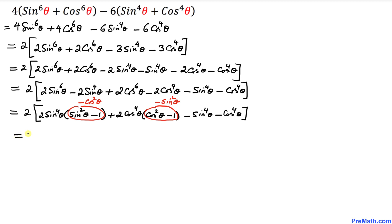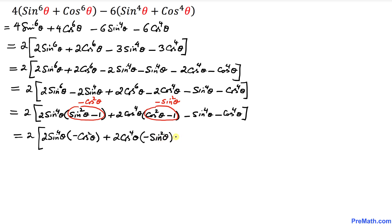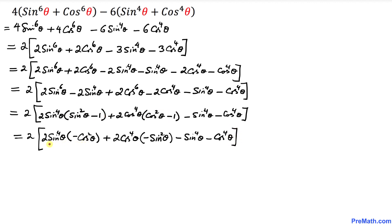Our equation can now be written as: 2 times, inside the bracket, 2 sine to the power 4 theta times negative cosine squared theta, plus 2 cosine to the power 4 theta times negative sine squared theta, minus sine to the power 4 theta, minus cosine to the power 4 theta. Between the first two terms we can see that 2 sine squared theta cosine squared theta is in common.